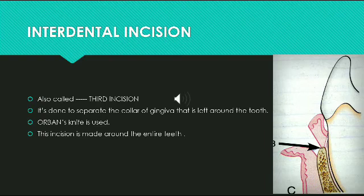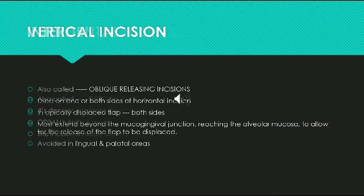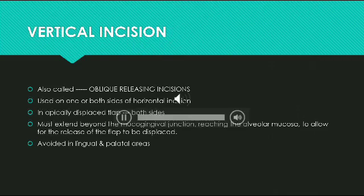These three incisions allow the removal of the gingiva around the tooth — that is, the pocket epithelium and the adjacent granulomatous tissue. A curette or a large scaler such as U15 or 30 can be used for this purpose. Now moving on to the vertical incision.